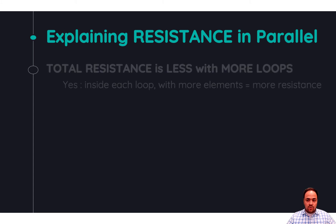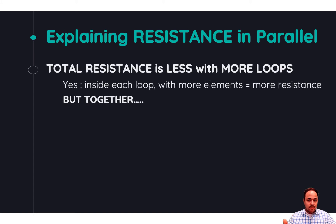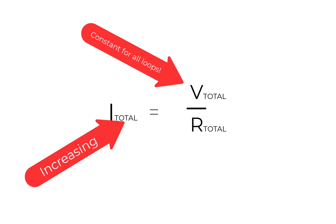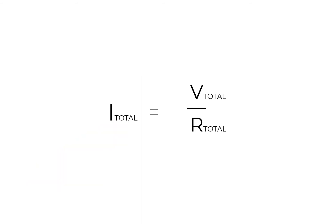Resistance in parallel is a little weird: total resistance actually decreases when you add more loops. I know that sounds strange — inside each loop yes you're adding resistors, but the total circuit resistance appears to decrease as you add more loops. Mathematically using Ohm's law: voltage is constant for all loops, so V does not change. When we add loops current increases — I is getting bigger. If V is not changing but I is getting bigger, R must be decreasing.